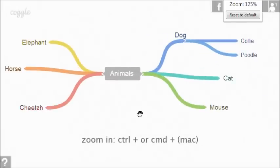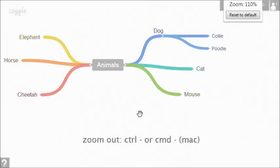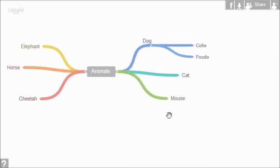There are lots of ways to zoom in and out, such as using CTRL or CMD and plus minus, or CTRL and the scroll wheel if you're using a mouse.